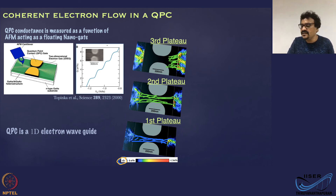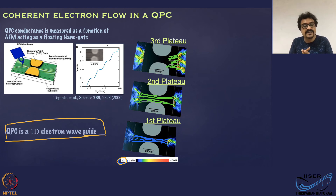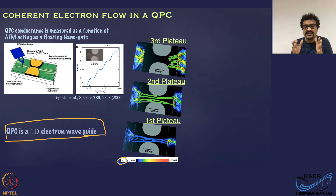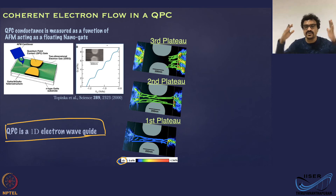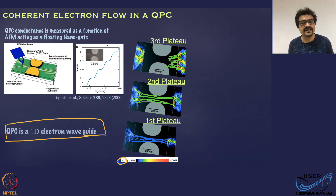What we are seeing is that the quantum point contact acts like a waveguide for electrons, similar to a waveguide for electromagnetic waves. Electrons going through the constriction have a wave nature, and because of the boundary condition created by the gate — the wave function must go to zero at the boundaries — they propagate through the constriction like electromagnetic waves going through a waveguide. You can think of a quantum point contact as a waveguide for electrons.